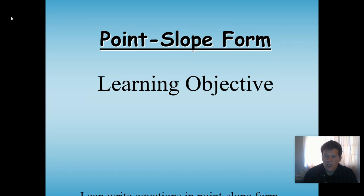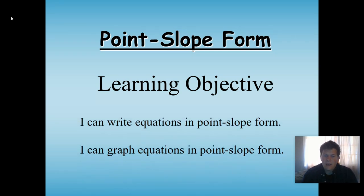Learning objectives today: I can write equations in point-slope form, and I can graph equations in point-slope form. The nice thing about slope-intercept and point-slope form is that they're literally telling you the two things you get with those different forms. In slope-intercept form, you got the slope and the y-intercept. You use them to make the equation and to graph it. In point-slope form, basically the same thing. You get one point on the graph, and you get the slope of the graph. Let's take a look.